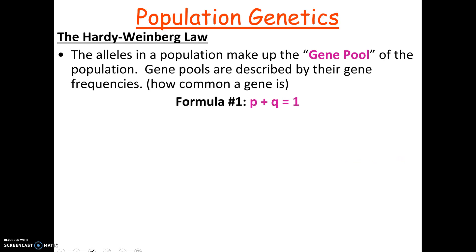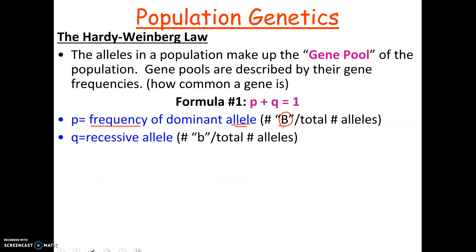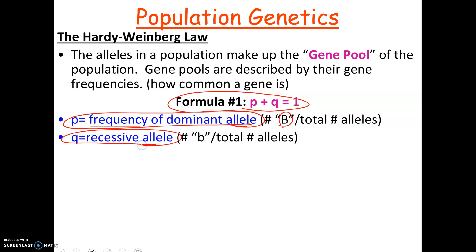The first formula we use with Hardy-Weinberg law is that p plus q equals 1. So what are p and q? P is the frequency — how common the dominant allele is. Think of the dominant allele as big B. If we add up all the alleles in the population, the number of copies of big B over the total gives us p. And q is the frequency of the recessive allele — little b. The formula sheet gives you p plus q equals 1, but it doesn't explain much further than that, so you have to know what to do with that information.